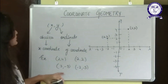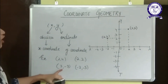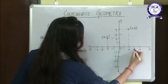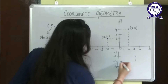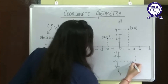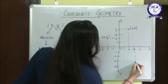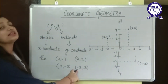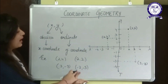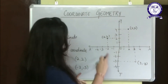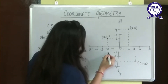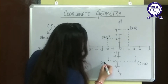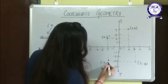The third point is (3, -3): 3 on the positive x axis and minus 3 on the negative y axis, giving us point (3, -3). The fourth point is (-2, -2): negative x and negative y, giving us the point (-2, -2).